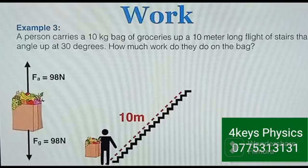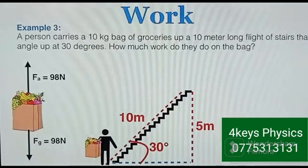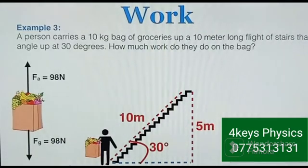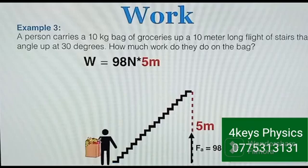Now the person carries a 10 kg bag up a 10-meter long staircase angled at 30°. We resolve the displacement into its vertical component: 10 × sin30° = 5 meters. The applied force of 98 N acts parallel to that vertical displacement, so the work done is 98 × 5 = 490 J.